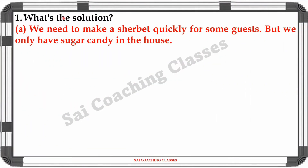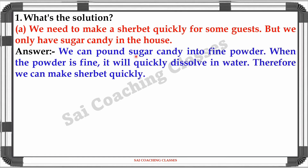Question 1, Part A. We need to make a sherbet quickly for some guests, but we only have sugar candy in the house. Answer: We can pound the sugar candy into fine powder. When the powder is fine, it will quickly dissolve in water. Therefore, we can make a sherbet quickly.